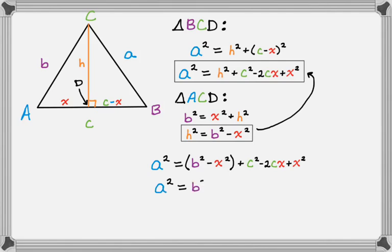This cleans up to a squared equals b squared plus c squared minus 2cx. But there's still an x in there, and I made up x when I was dropping that altitude. So I still want to get rid of that, but I'm closer.